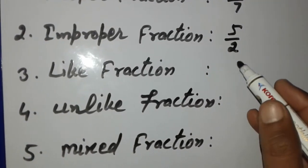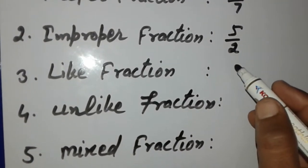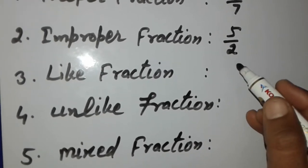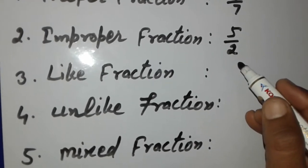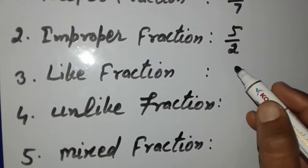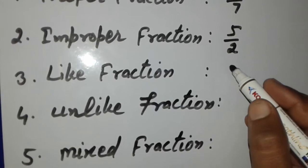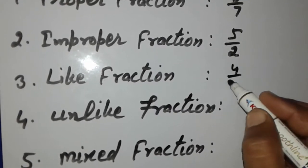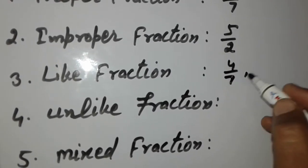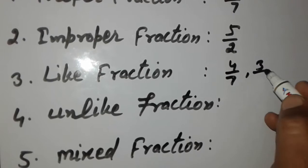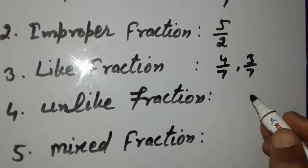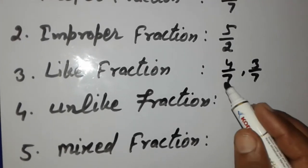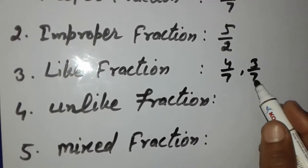Thirdly, like fractions. Two fractions are said to be like fractions if their denominators are the same. For example, four upon seven and three upon seven are like fractions because their denominators are the same.